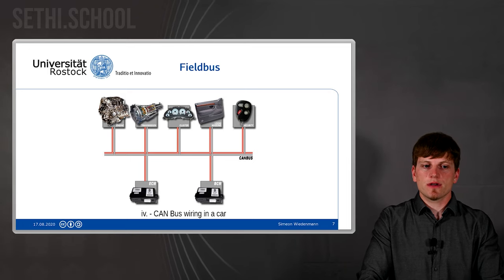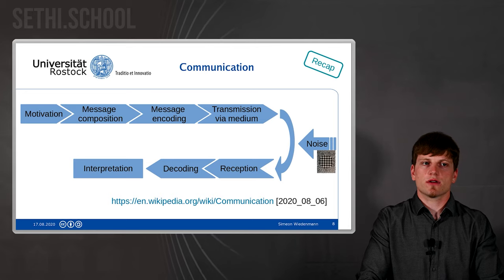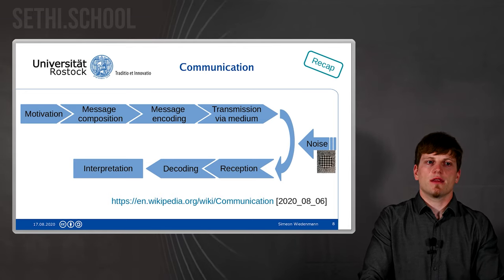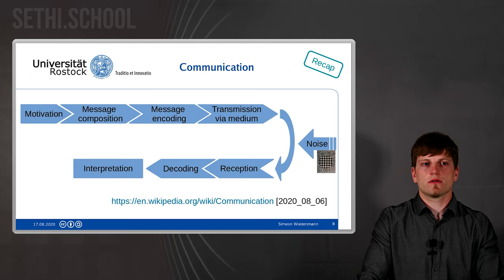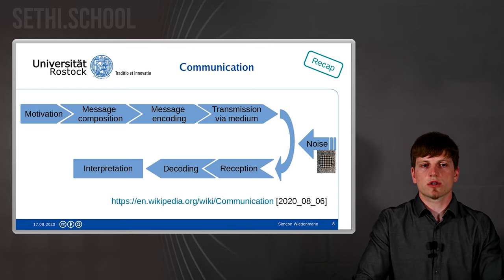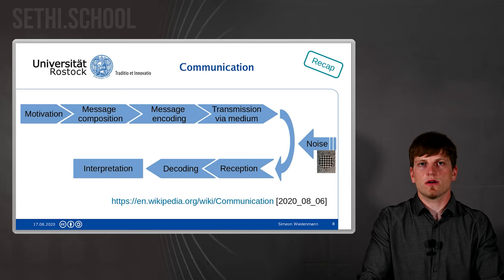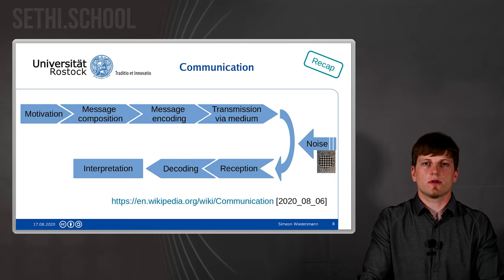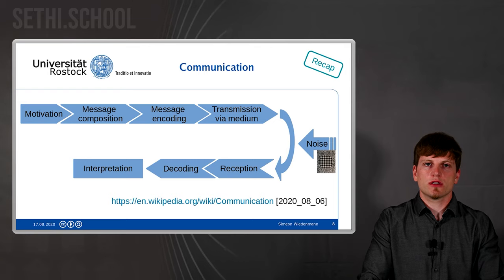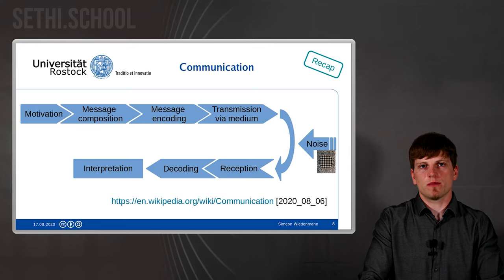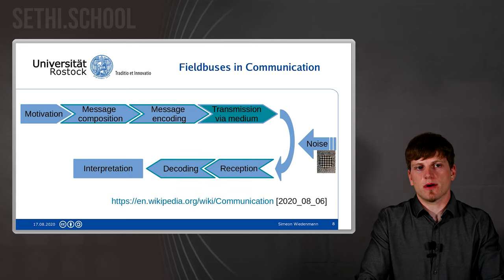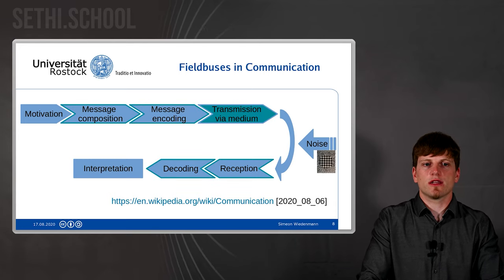If you remember from my first talk, we had a look at what communication is, and we found that communication uses a motivation to start, then messages are composed, encoded, and transmitted via a medium — where noise is added to the transmission, which is unfortunate but the case in reality. On the other side, reception and decoding take place before interpretation. Where do field bus systems come in? They take over part of the communication — definitely transmission media is a big part — but field bus systems also come with protocols.